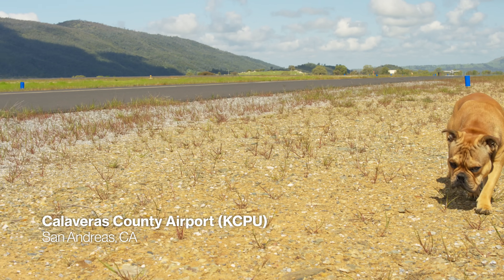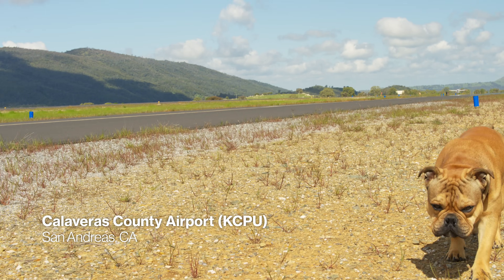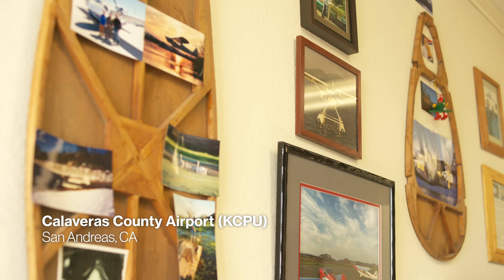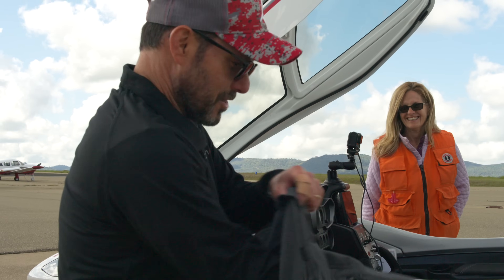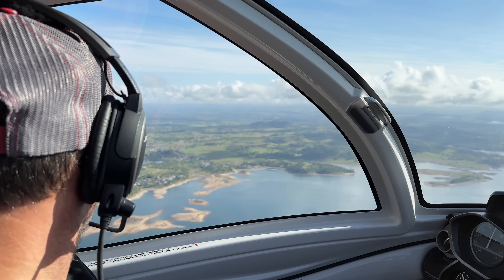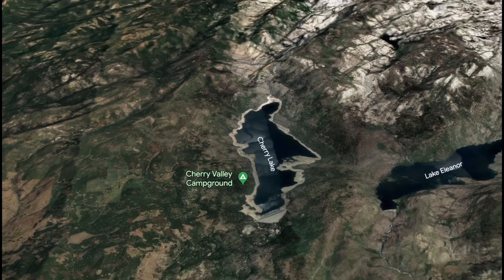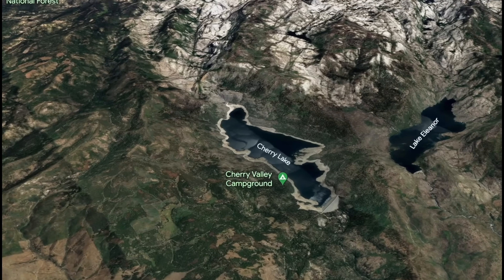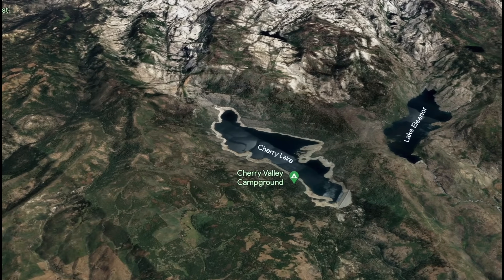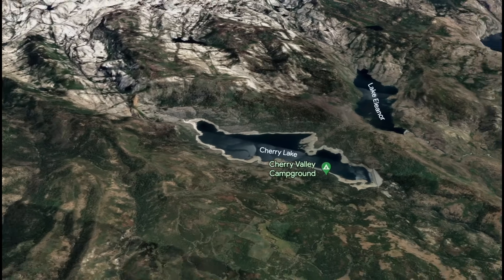My name is Rich Bookbinder. I'm the safety and standardization pilot at Icon Aircraft. I'm here with Terry Hayes, who was actually my seaplane instructor four years ago, who taught me to fly seaplanes. The purpose of us today meeting together is to plan a flight to Cherry Lake. Cherry Lake's at 4,700 feet, so it's a good starter lake if you're starting to train to go to higher elevations.